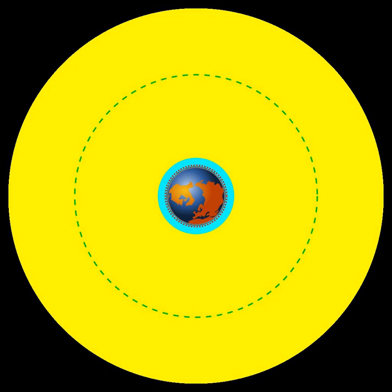Circular orbit, an orbit that has an eccentricity of zero and whose path traces a circle.